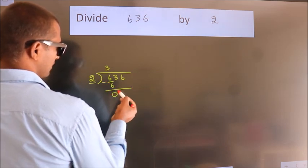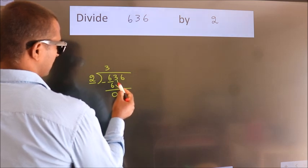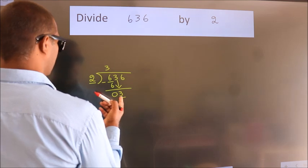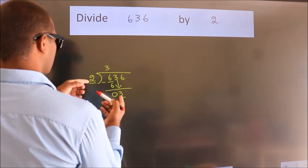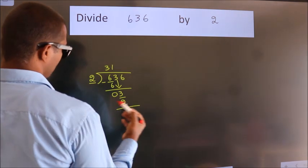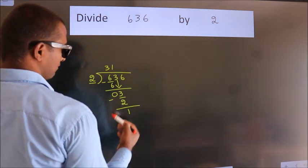After this, bring down the beside number. So, 3 down. A number close to 3 in 2 table is 2 1s 2. Now we subtract. We get 1.